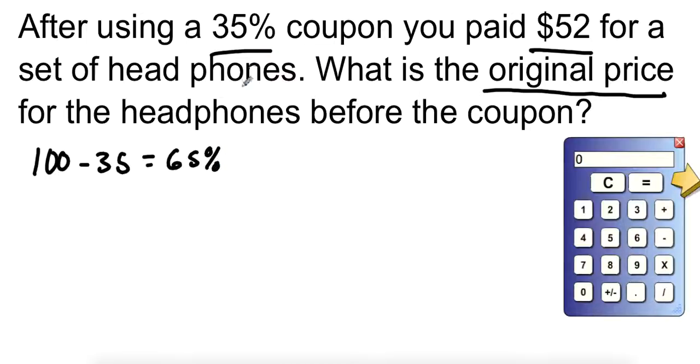So what this means is that $52 is 65% of the original price. So I'm going to have $52 over our 65% here. Of course, I want to lead myself to figure out what 100% is. So I'm going to need to find a common factor between 65 and 100.